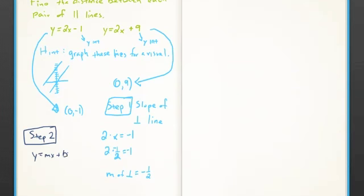And we have our y-intercept for this equation already, because we're setting the perpendicular line to go through that other parallel line.